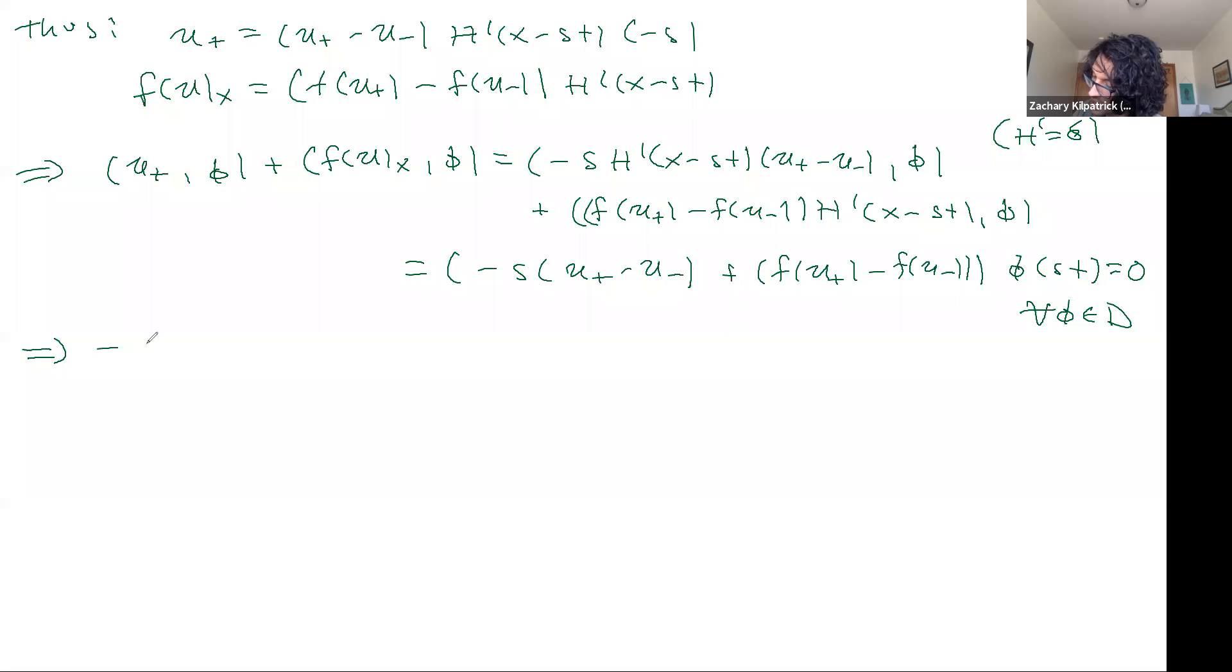what this tells us is that minus S U plus minus U minus plus F of U plus minus F of U minus is equal to zero.